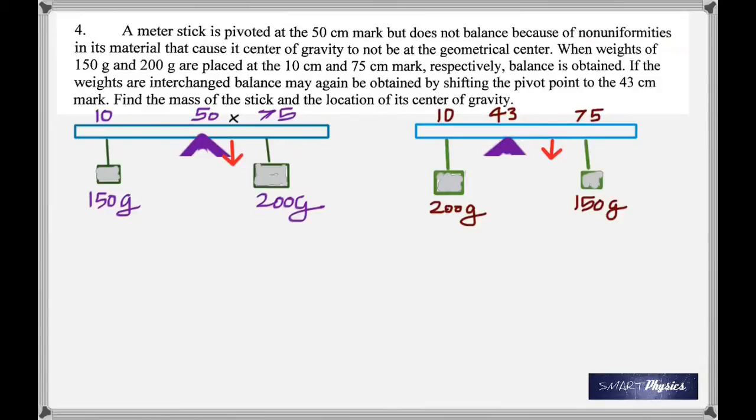Now we've got to set up two equations because now we know that it's balanced. That is x centimeters. So 150 times 50 minus 10, which is the distance, should be equal to the mass of the meter stick, which is m grams times x minus 50. That is the first clockwise torque and the second one is going to be 200 times 75 minus 50. That should be pretty obvious now.